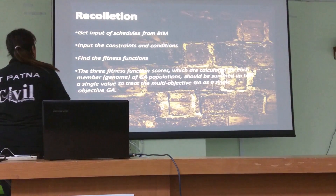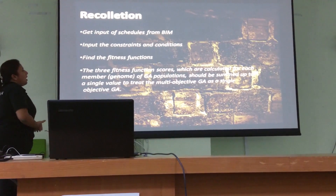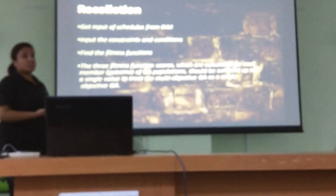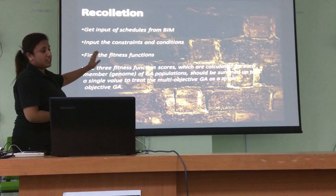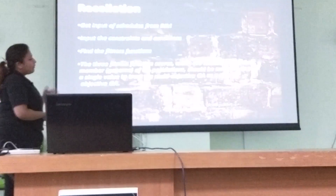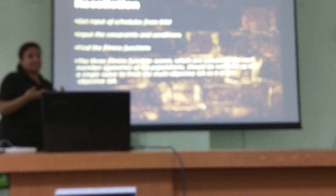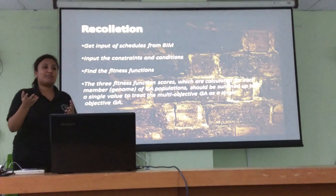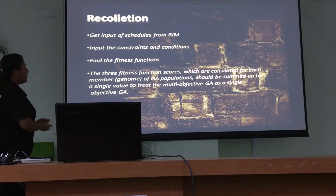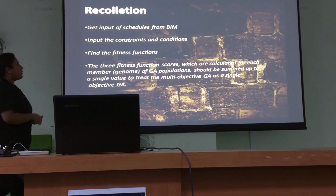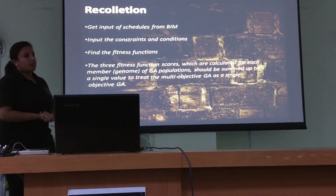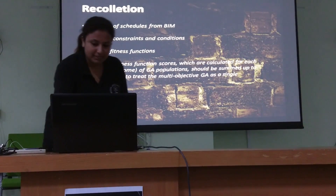So what is the recap we can draw from the project? We will get our schedule inputs from the BIM. We will put the input constraints and conditions using the MOCCs — the constraints being construction dependencies, and the conditions being labour cost, material cost, and supply chain. Then we will find the fitness function: what is supposed to be the best. A column with zero cost is optimized but is not the fittest option. Because we have three objective functions — three fitness functions — we will use these three fitness function scores, calibrated for each variable, then summed to a single value to treat the multi-objective GA as a single-objective GA. That's all. Thank you.